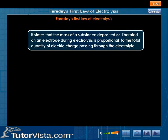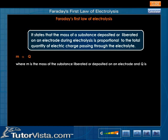The first law of electrolysis states that the mass of a substance deposited or liberated on an electrode during electrolysis is proportional to the total quantity of electric charge passing through the electrolyte. That is, M is directly proportional to Q, where M is the mass of the substance liberated or deposited on an electrode and Q is the total quantity of charge passing through the electrolyte.